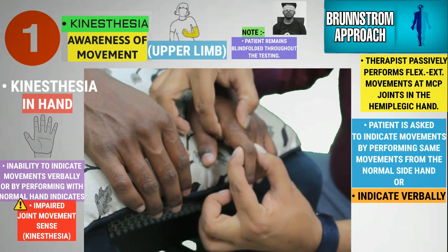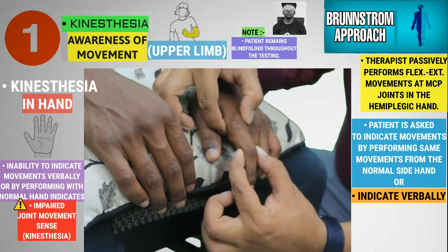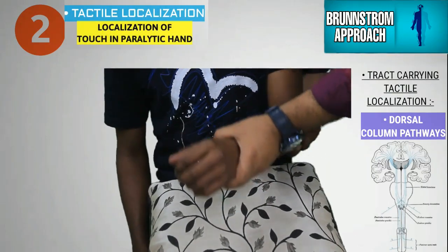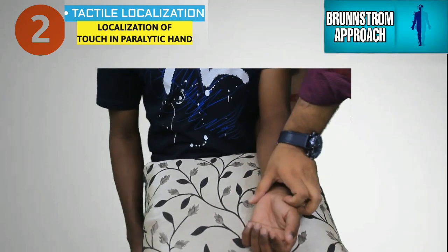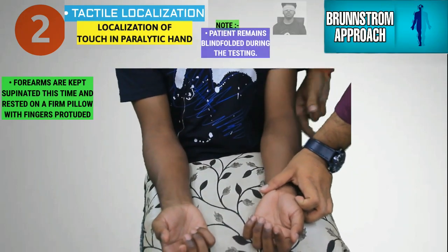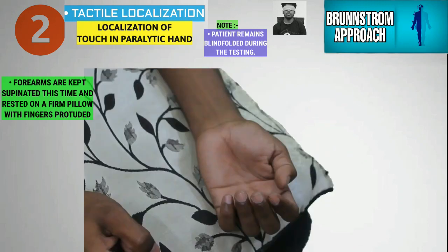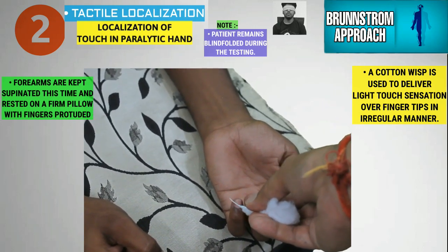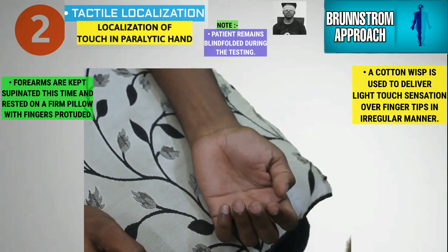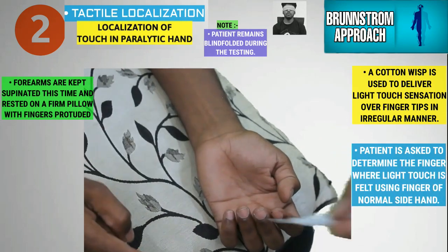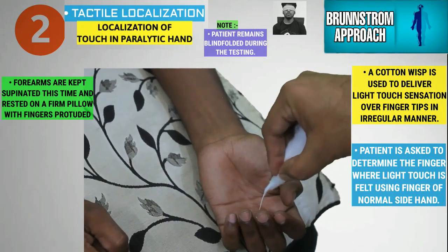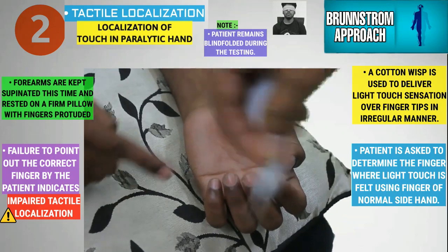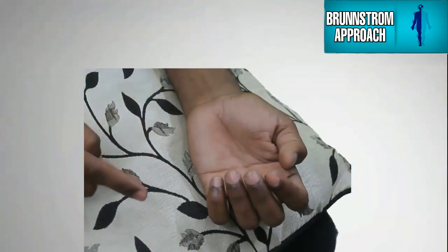Inability to sense the finger motion or its position in space indicates impaired kinesthetic and proprioceptive sense. The therapist now checks for the tactile localization sense. The patient's hands are positioned in the lap on a firm pillow as before. The therapist uses a cotton wisp to deliver light touch sensation on the palmar surface of each fingertip in an irregular manner, and the patient is asked to determine which fingertip is being touched. Failure to identify the correct finger indicates impaired tactile localization sense.